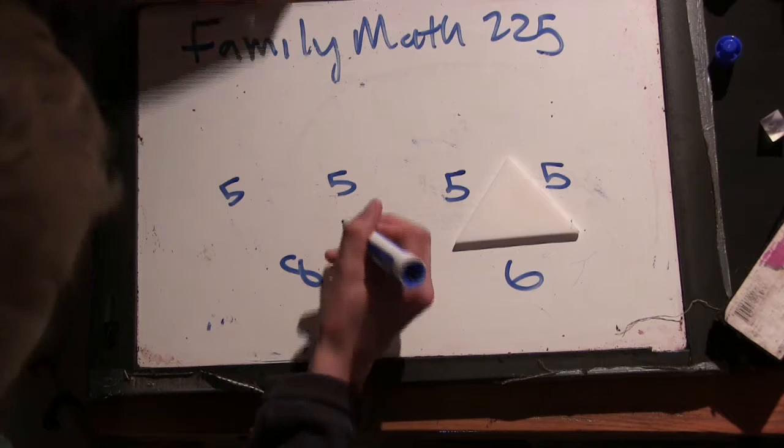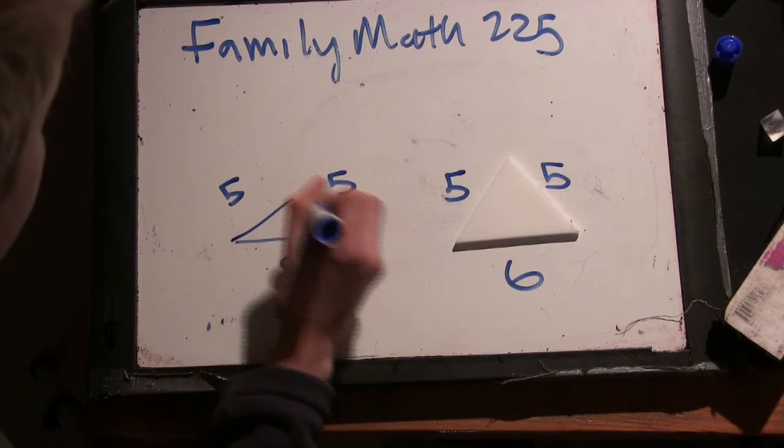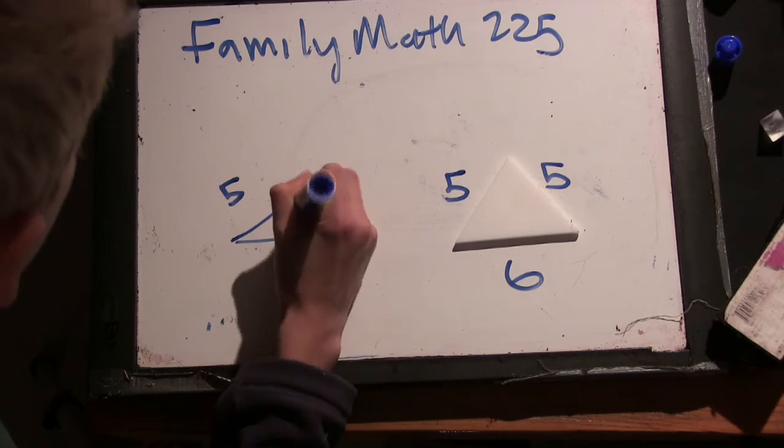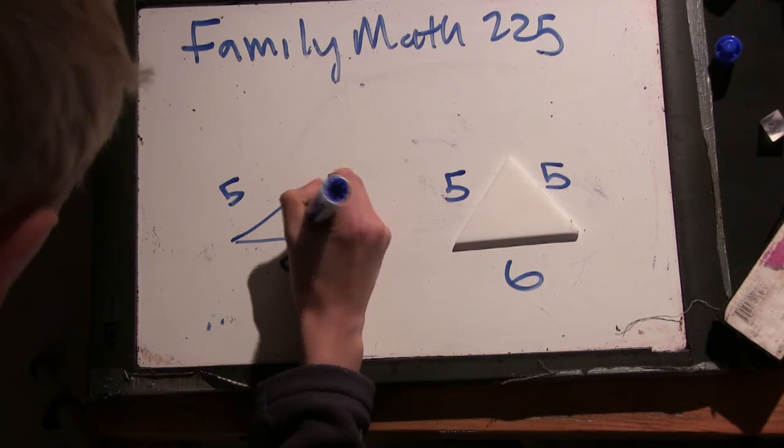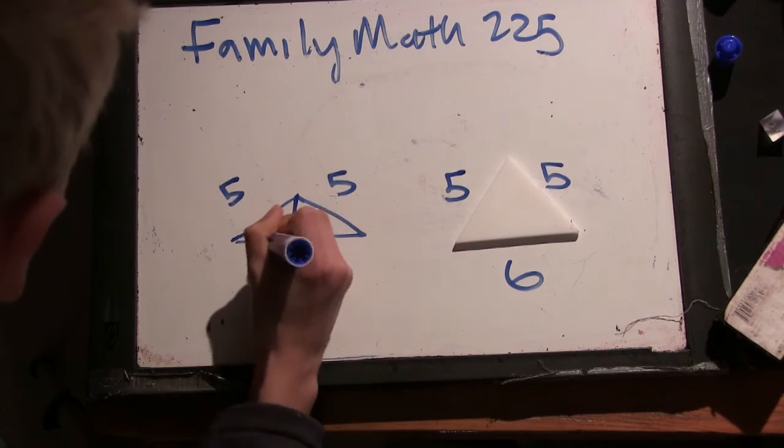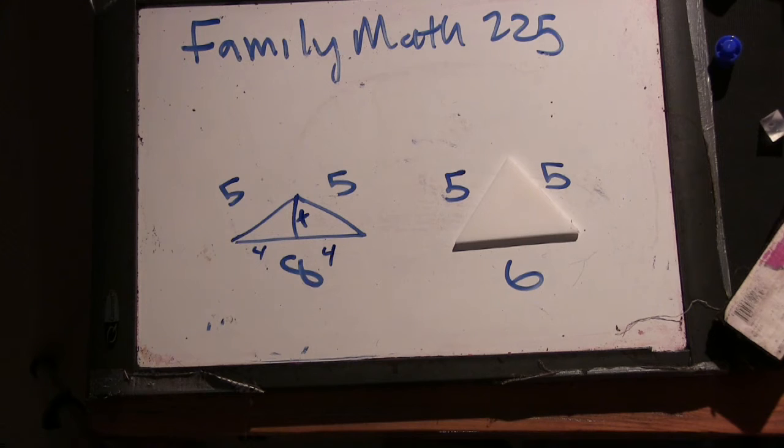How do you think we could find that height? Well, we could just redraw the triangle. We could divide it into two smaller, we could draw the height, call it x. Alright. And these two parts would be 4. And we could use the Pythagorean theorem to find the missing side.